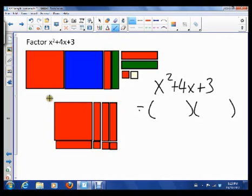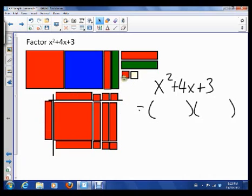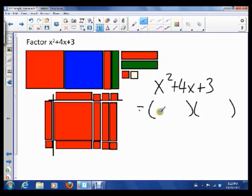So again, that shows us the factors. The factors are x plus 3, and on the other side, x plus 1. So this breaks down to x plus 3, x plus 1.